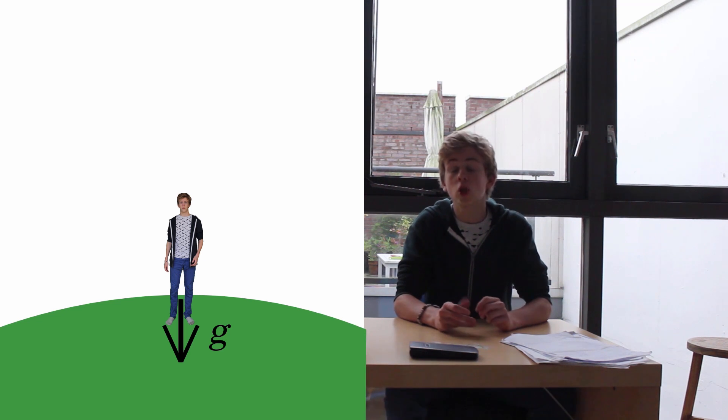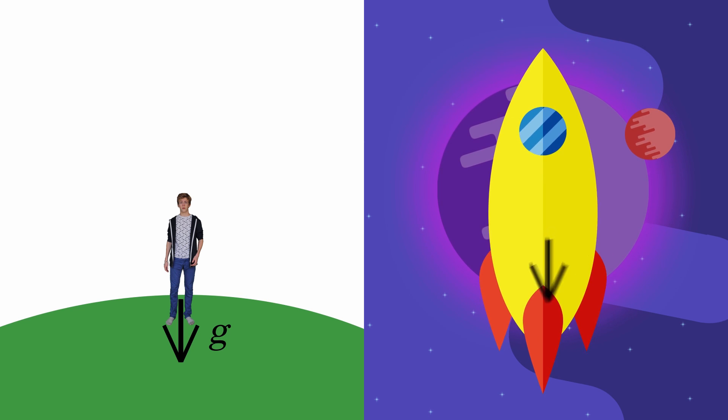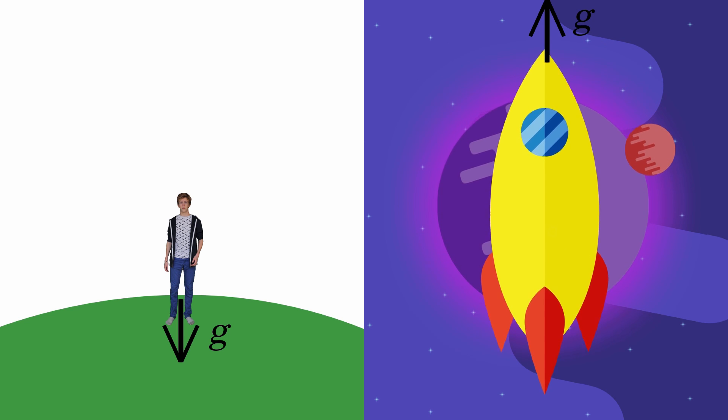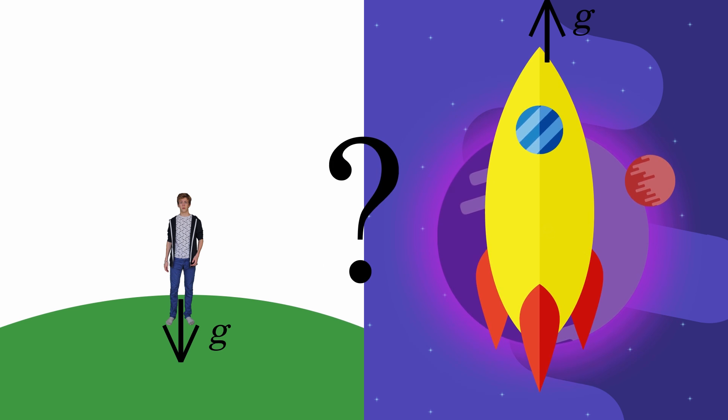The equivalence principle stated that if you are on the ground being subject to gravitational force g, 9.81 meters per second squared, or traveling through space at an acceleration of 9.81 meters per second squared, there will be no experiment you could perform to know whether you are in space or standing on the ground.